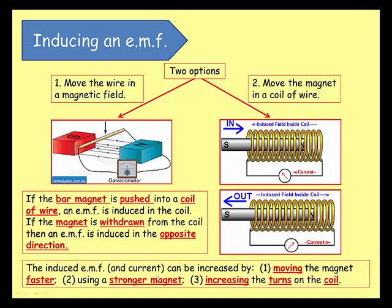The induced EMF and current can be increased by moving the magnet faster, using a stronger magnet, or using more turns on the coil. So you can generate electricity in this way — that is just amazing.